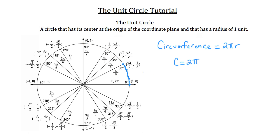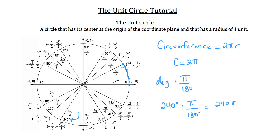The easiest way to find any radian value is the formula: degrees times pi over 180. For example, take 240 degrees: 240 times pi over 180 gives 240 pi over 180. Dropping the zero, we have 24 over 18, which reduces to 4 over 3, so the answer is 4 pi over 3. And you'll notice that is the radian value shown on the unit circle for 240 degrees — the arc distance from (1, 0) all the way to that point.